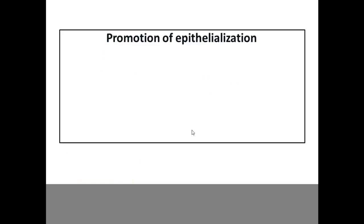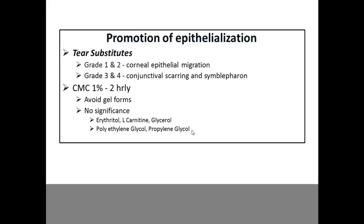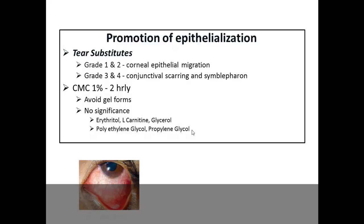Promotion of epithelialization uses tear substitutes: for grade 1 to 2, they help in epithelial migration; for grade 3 to 4, they prevent conjunctival scarring. The preferred tear substitute is CMC 1%. Gel forms are not preferred as they enhance stagnation of toxic and inflammatory materials. Combinations like erythritol, glycerin, glycerol, and L-carnitine (e.g., Optive eye drops) are not significant here, as we want to wash the eye of toxic materials rather than alter osmolarity. Polyethylene glycol and propylene glycol, which form a coat, are also not needed.